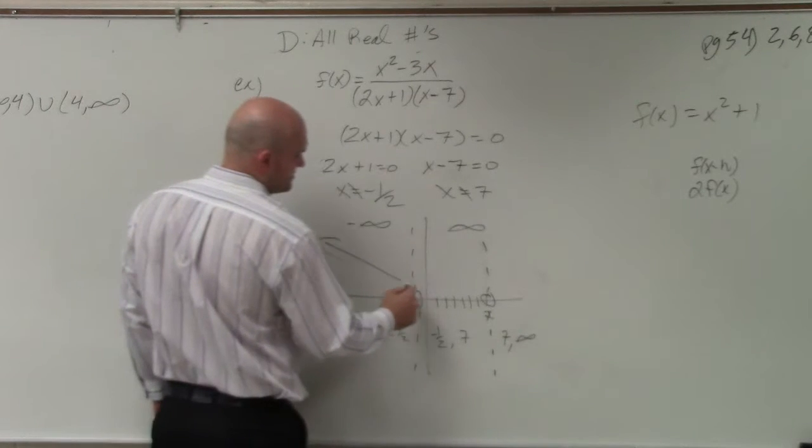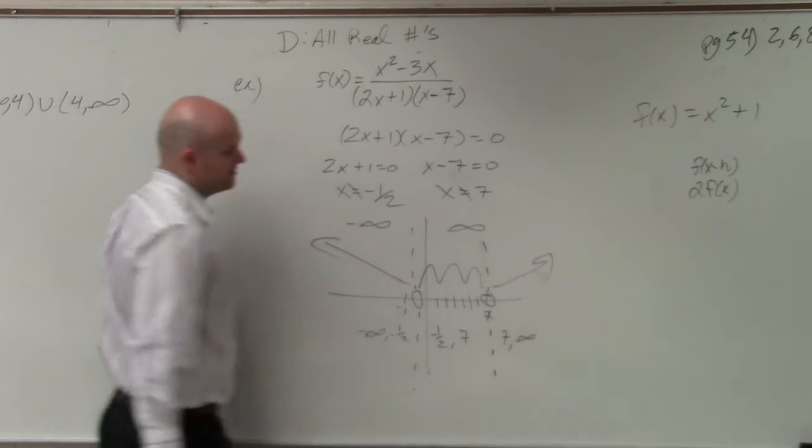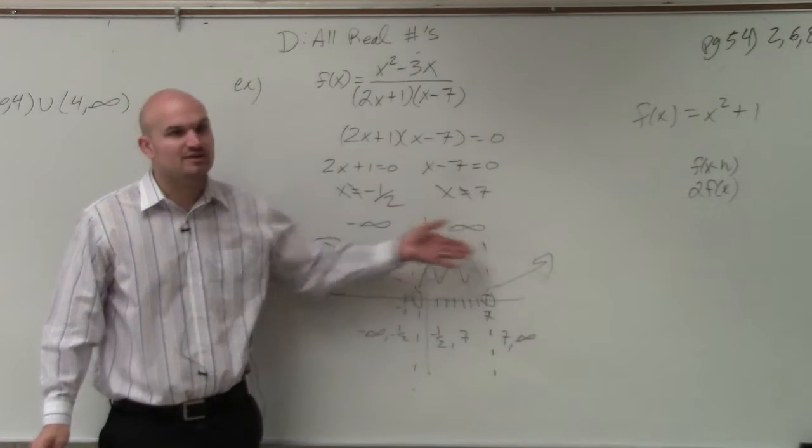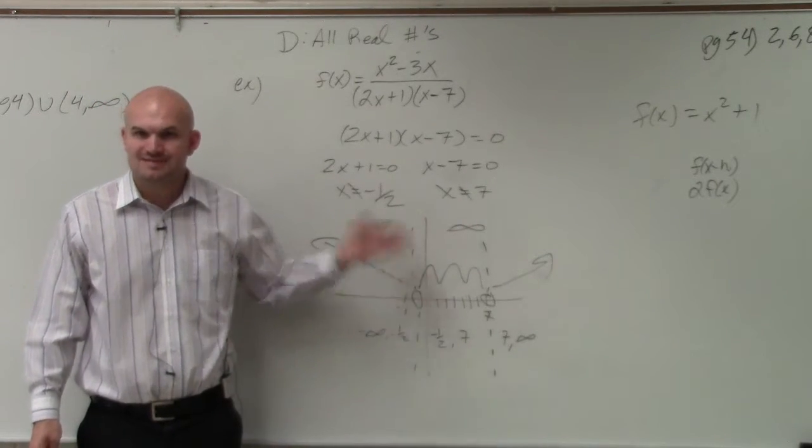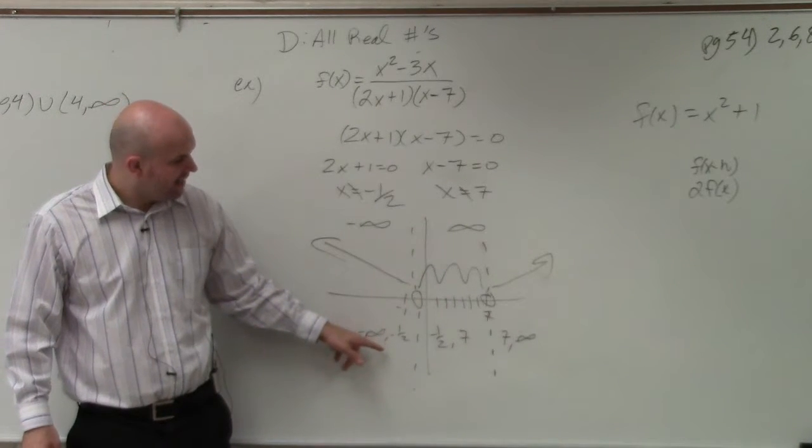Because the graph is going to look like this. It's going to stop there, it can do whatever here, and then it's going to go like that. But there's a hole or an asymptote at those two values, because it's not defined. And I can actually show you guys something as well. So therefore...